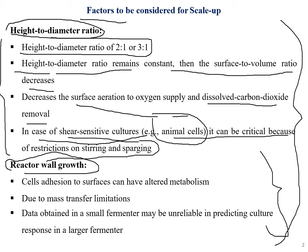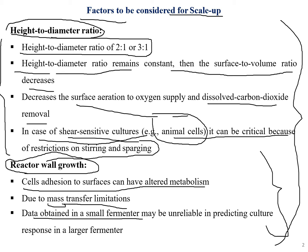The second factor is reactor wall growth, which is very important when considering scale up. Cell adhesion to surfaces can alter metabolism — microbes or medium can get stuck on glass walls, which may alter the metabolism of the entire reaction and lead to mass transfer limitations, reducing the expected output.